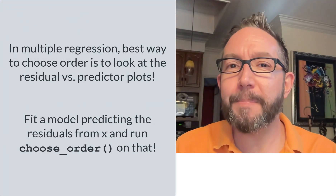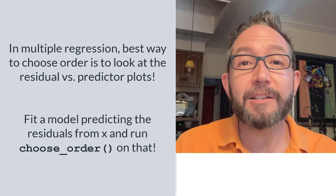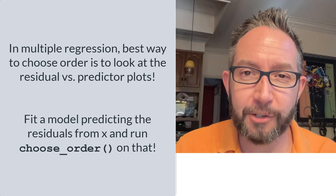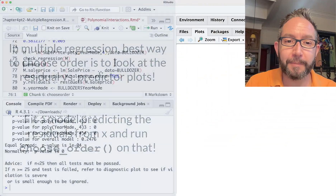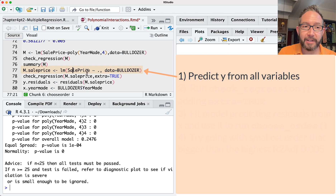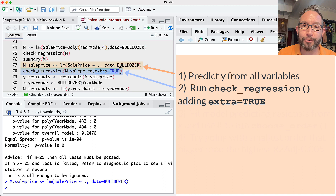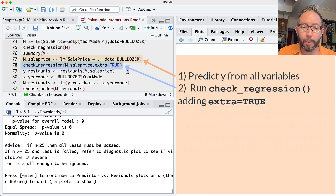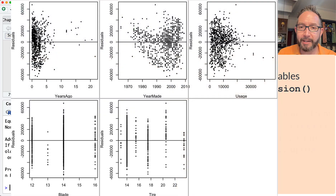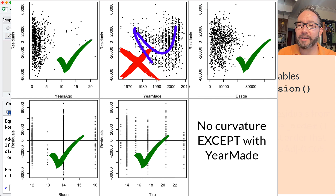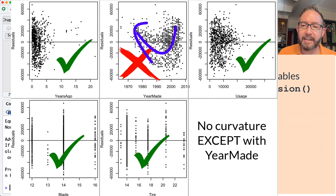With multiple predictors, the best way to determine if you need polynomial terms is to look at the residuals plot to see if there's leftover curvature between the residuals and the values of each predictor. Predicting sale price from all predictors in the bulldozer dataframe and running `check_regression` with `extra = TRUE` gives us residuals versus each predictor. The residuals versus year-made plot shows a clear U-shaped curvature, indicating non-linearity even after accounting for the bulldozer's usage, blade, tire size, and auction timing.